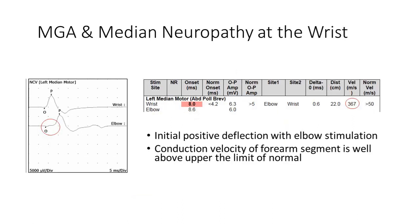This slide is demonstrating the nerve conduction study findings when recording the median nerve at the abductor pollicis brevis when there is a Martin Gruber anastomosis present. In this example, the wrist stimulation reveals a prolonged onset latency of 8, which is consistent with median neuropathy at the wrist. When the median nerve is stimulated at the elbow, there is a positive deflection reflecting depolarization somewhere away from where the recording electrode is placed. There is also a spuriously fast conduction velocity of the forearm segment of the median nerve.